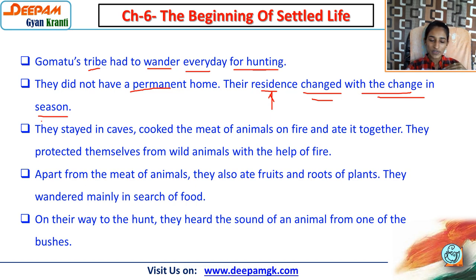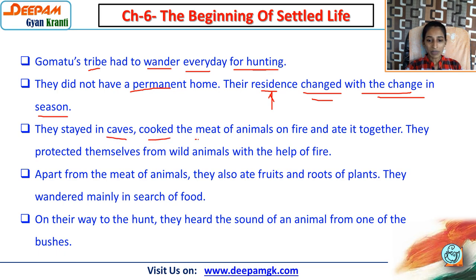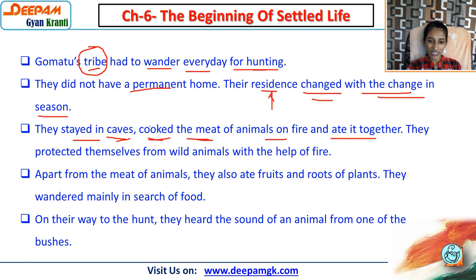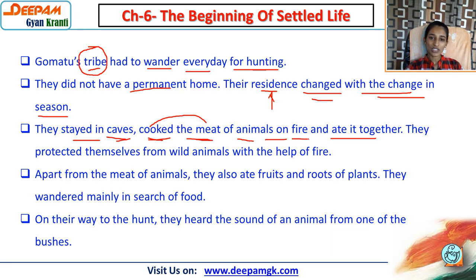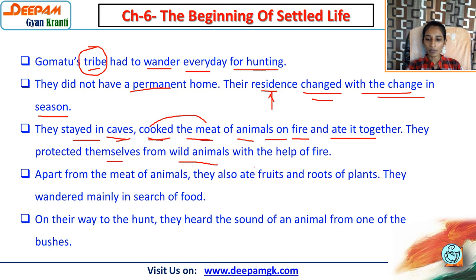As seasons changed, they had to change their place. They stayed in caves, cooked the meat of animals on fire, and ate it together. From that time we have the concept of society - a tribe. They cooked meat and ate together, which was a social activity.